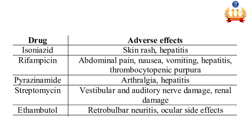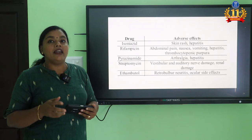The first-line TB drugs are Isoniazid, Rifampicin, Pyrazinamide, Streptomycin, and Ethambutol. Isoniazid causes skin rashes, hepatitis, and peripheral neuropathy — give vitamin B6 (pyridoxine) with it. Rifampicin's main side effects are red-orange colored urine, abdominal pain, nausea, vomiting, hepatitis, and thrombocytopenic purpura. Pyrazinamide causes arthralgia — give NSAIDs. Streptomycin causes vestibular or auditory nerve damage. Ethambutol causes ocular problems and eye damage.